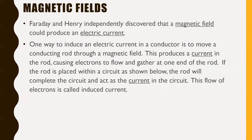One way to induce an electric current in a conductor is to move a conducting rod through a magnetic field. This produces a current in the rod, causing electrons to flow and gather at one end. If the rod is placed within a circuit, the rod will actually complete the circuit and act as the current source. This flow of electrons is called induced current — seemingly out of nothing other than movement, you are actually creating an electric current.